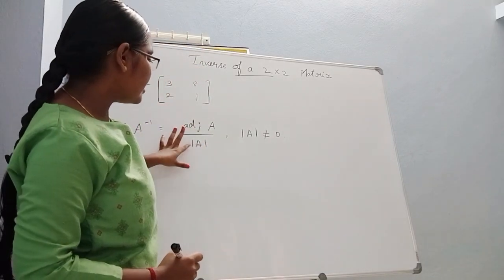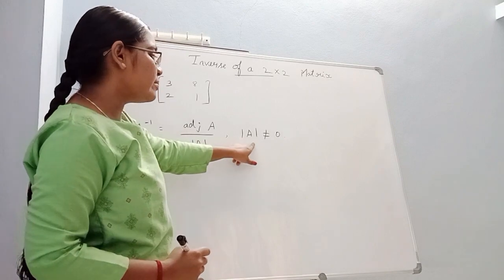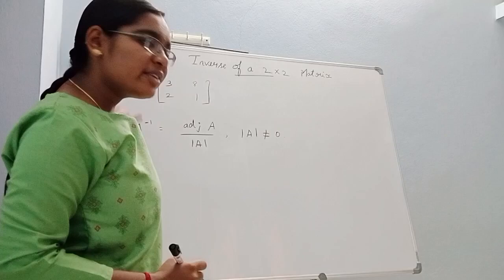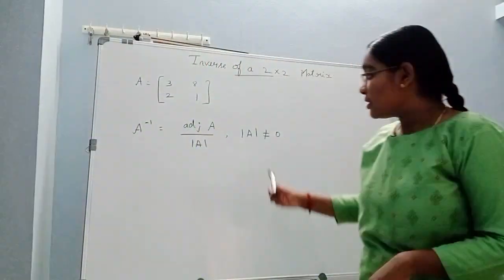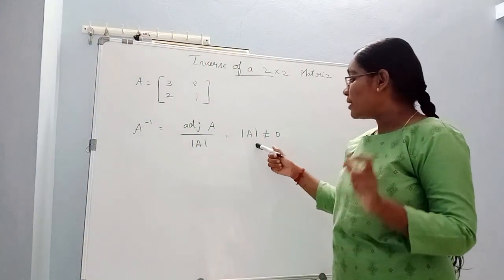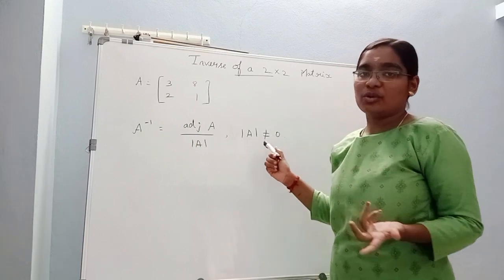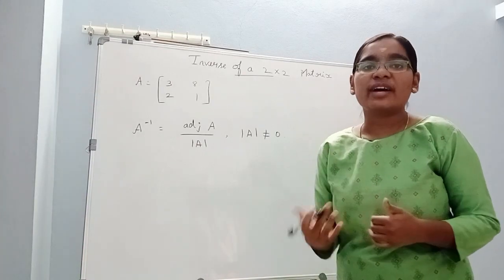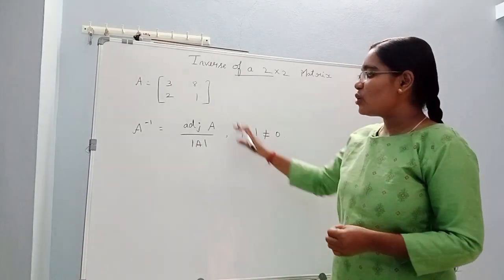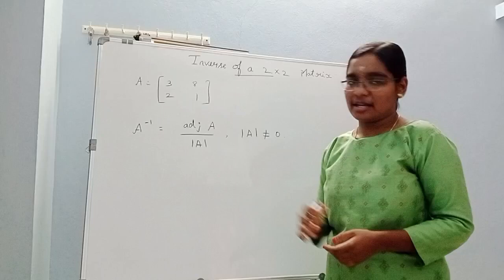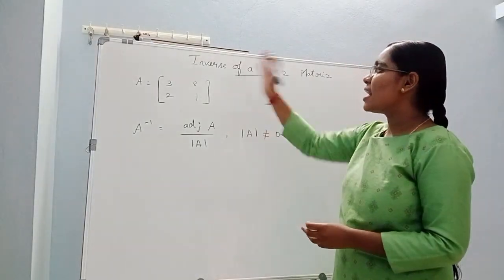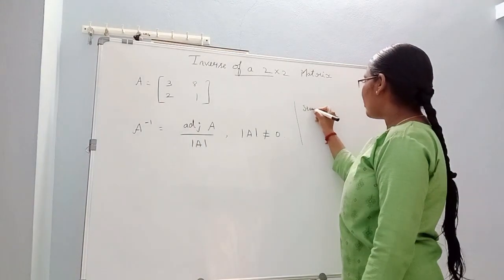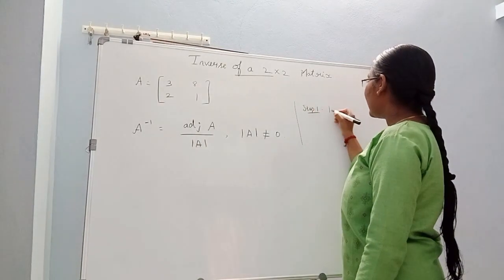Adjoint of A divided by determinant of A, where determinant of A is not equal to 0. If A inverse exists, the determinant of A must not equal 0. Step 1: find the determinant.